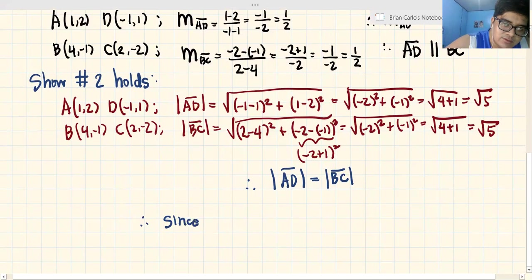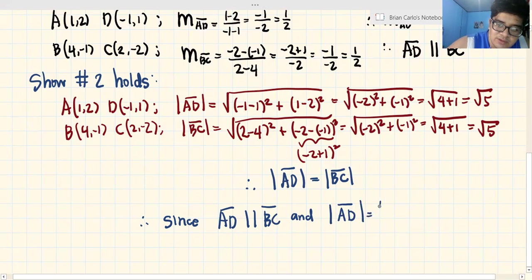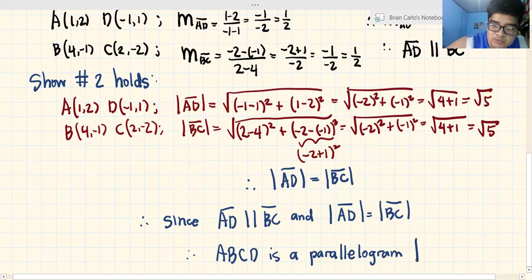Therefore, since segment AD is parallel to segment BC and the distance between AD is equal to the distance between BC, ibig sabihin ABCD is indeed a parallelogram. And we put a box and fill it in to indicate that this is the end of proof.